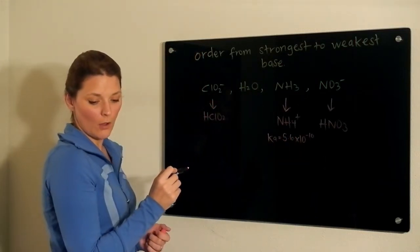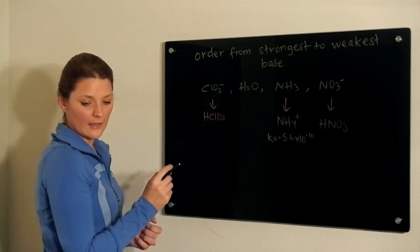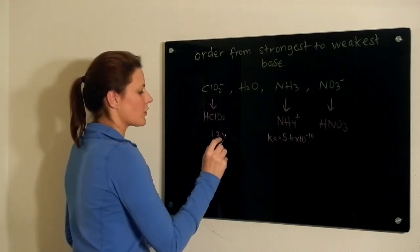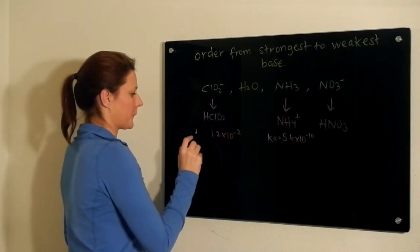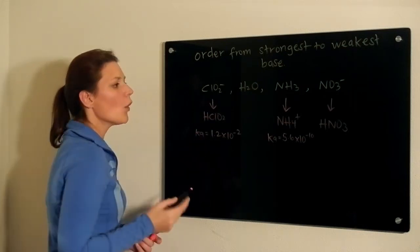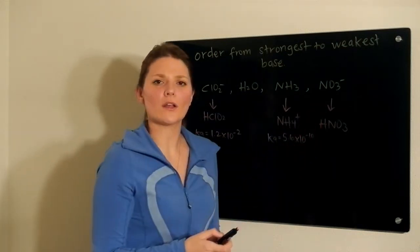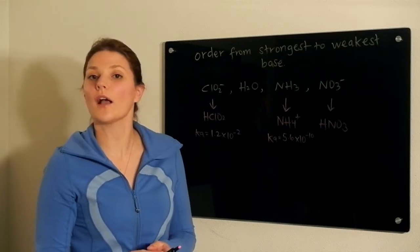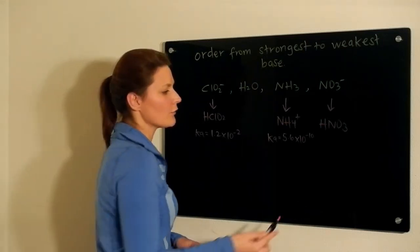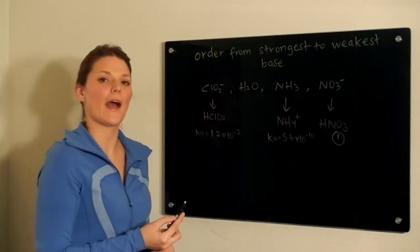And if you look up the Ka value of your HClO2, it has a value of 1.2 times 10 to the negative 2. Remember, you're not going to find a value for nitric acid because it's a strong acid. So automatically you know that this here is the strongest substance you have.